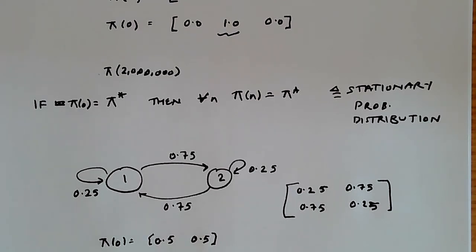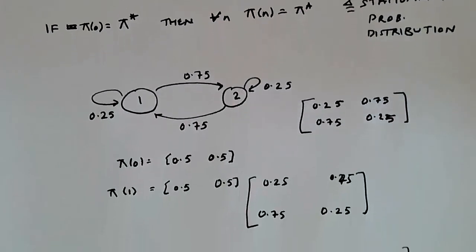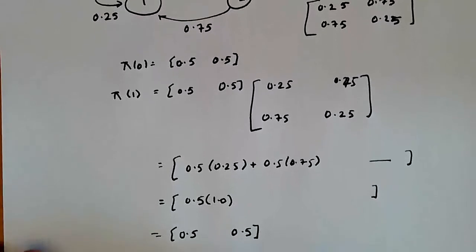And because this is 0.5, the other element has to be 0.5 because it has to add up to one.